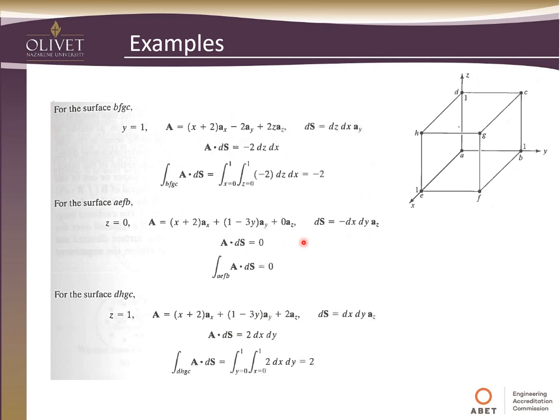Of course, the final surface, DHGC. So DHGC, that's what's on top here. Of course, that vector will be pointing up. So that'll be positive. With z equal to 1. Plug that in. This time we do have something at the a_z component. So we dot the a_z's. That's what we get. The a_x and a_y go to 0. Integrate that out. And then when we get that integrated, that comes to 2.